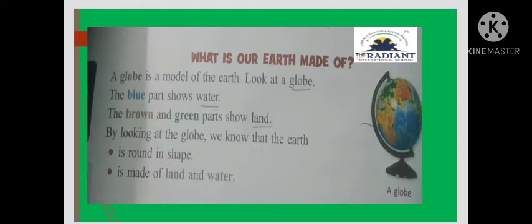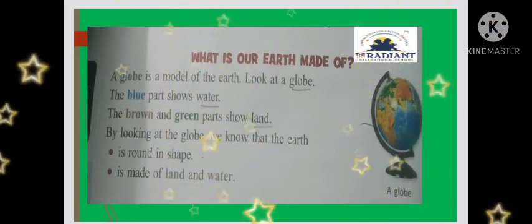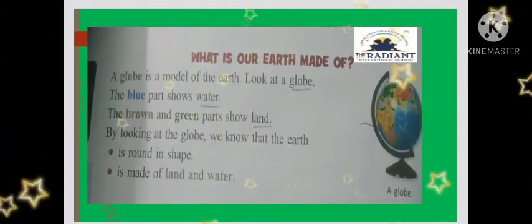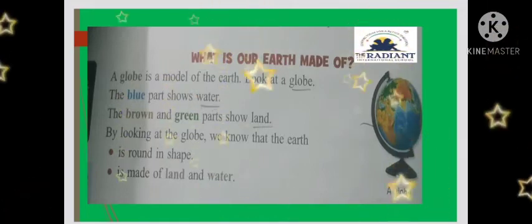Again I repeat, a globe is model of earth. Look at the globe. The blue part shows water. The brown and green part show land. By looking at the globe we know that the earth is round in shape and is made up of land and water.